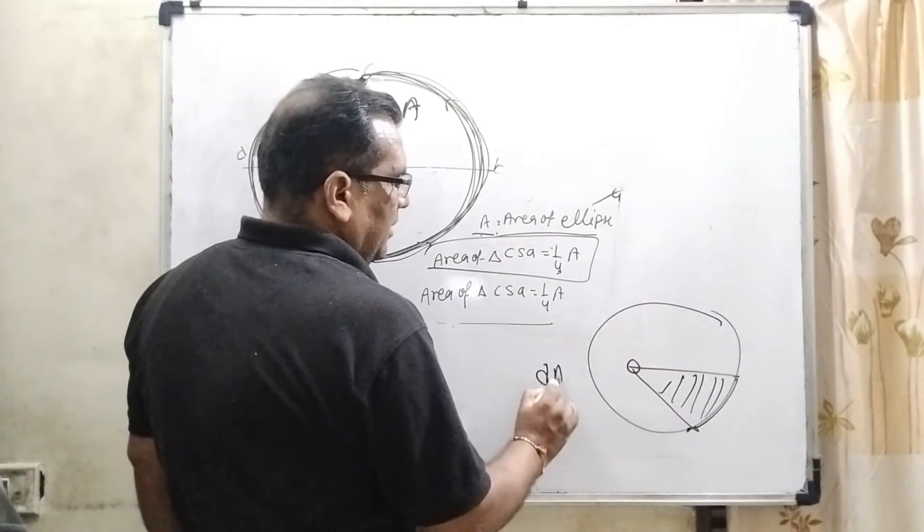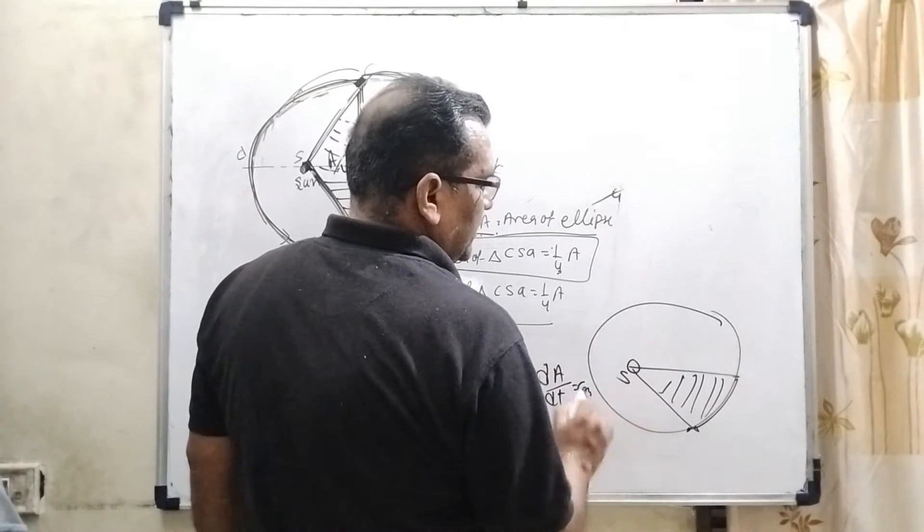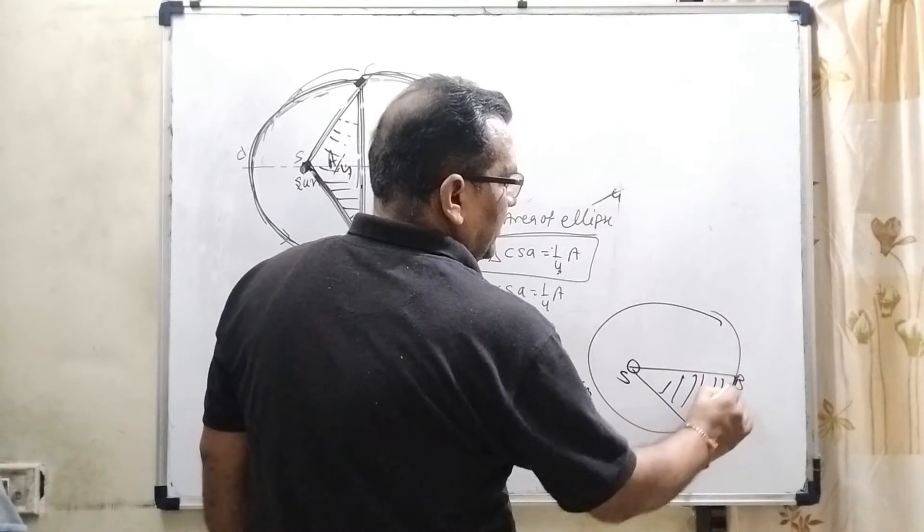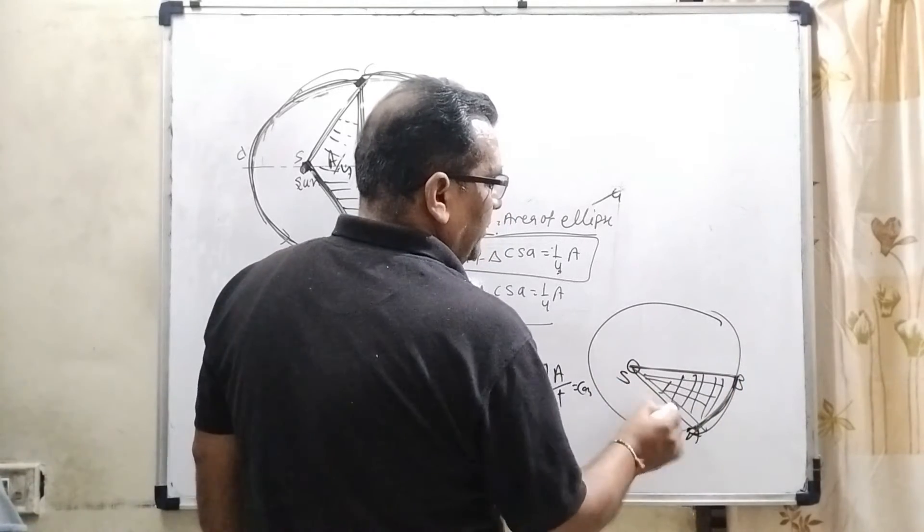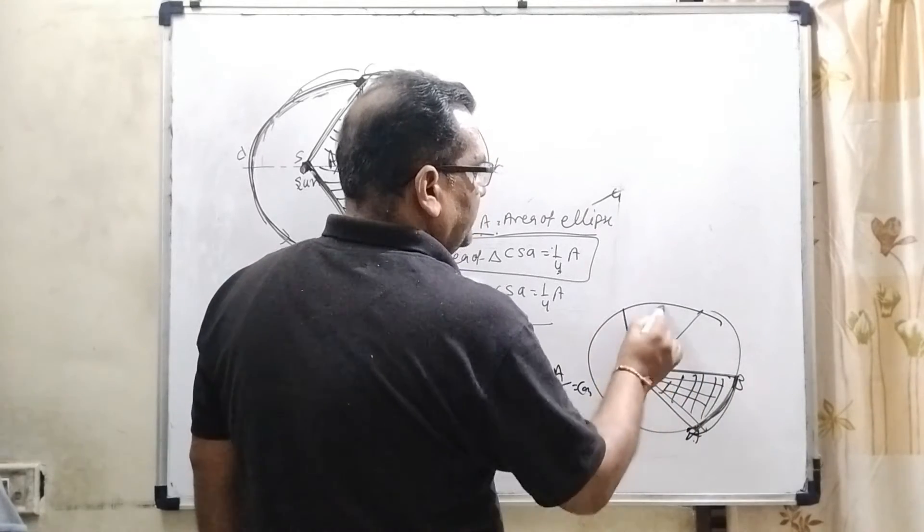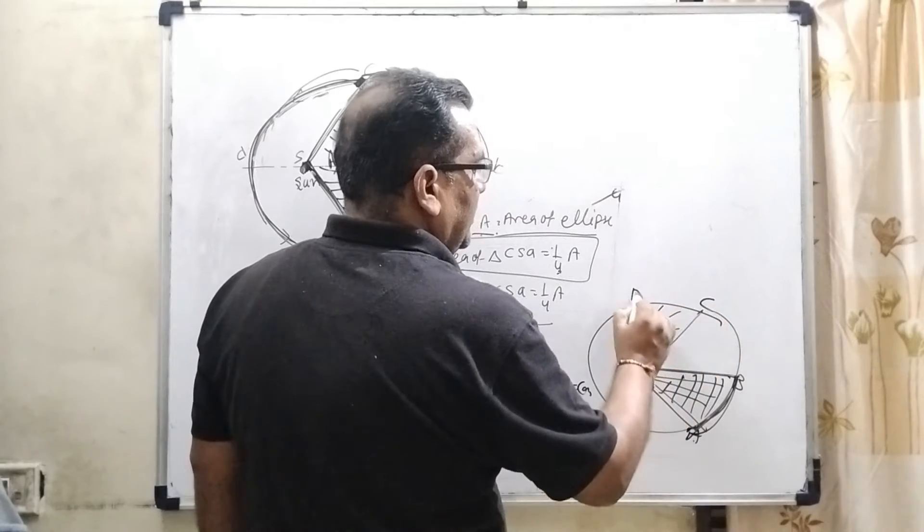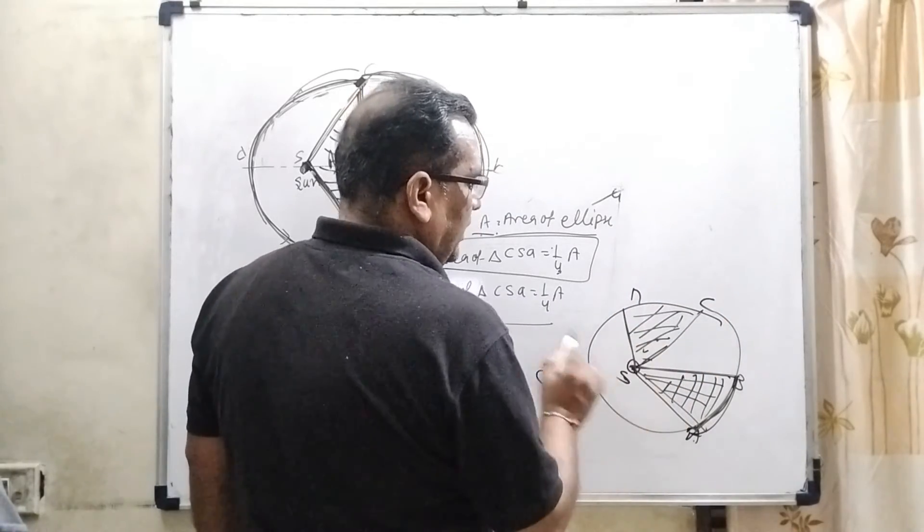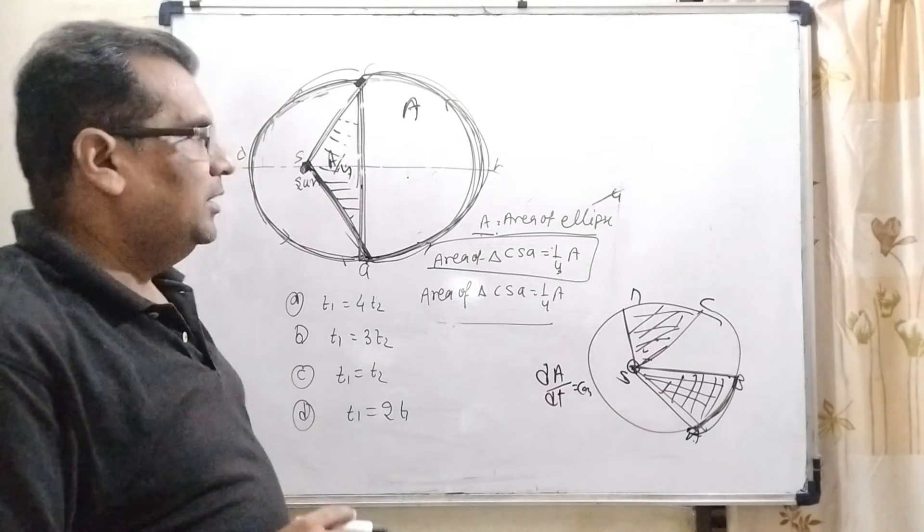Let us suppose this is Sun and this distance is covered AB. Then area is formed as SAB and another part that is covered as CD. So, whole area is everywhere constant. This constant means dA/dt equal to constant.